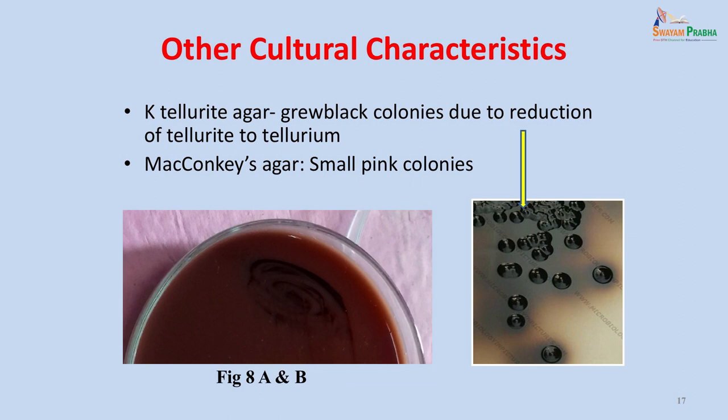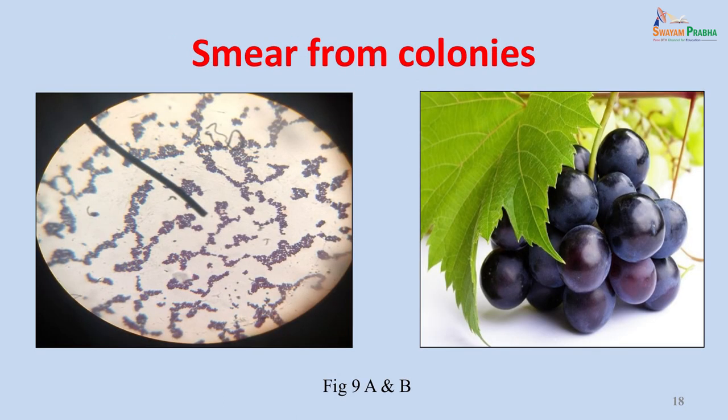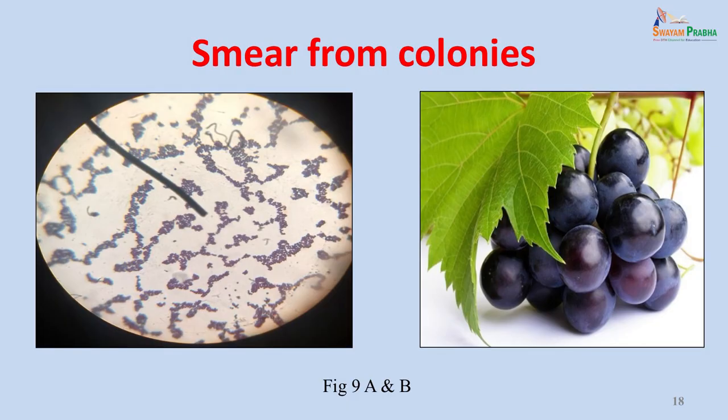On MacConkey's agar, Staphylococcus may sometimes not grow; if it does, it produces small pink colonies. A smear made from the colonies and stained with Gram stain again showed gram-positive cocci in clusters. These gram-positive cocci in clusters resemble a bunch of grapes — the word 'staphyle' refers to a bunch of grapes, and because they are tiny and round the organism is called Staphylococcus. They are arranged this way because they divide in three different planes, and the daughter cells remain attached to the mother cell, giving the appearance of a bunch of grapes.